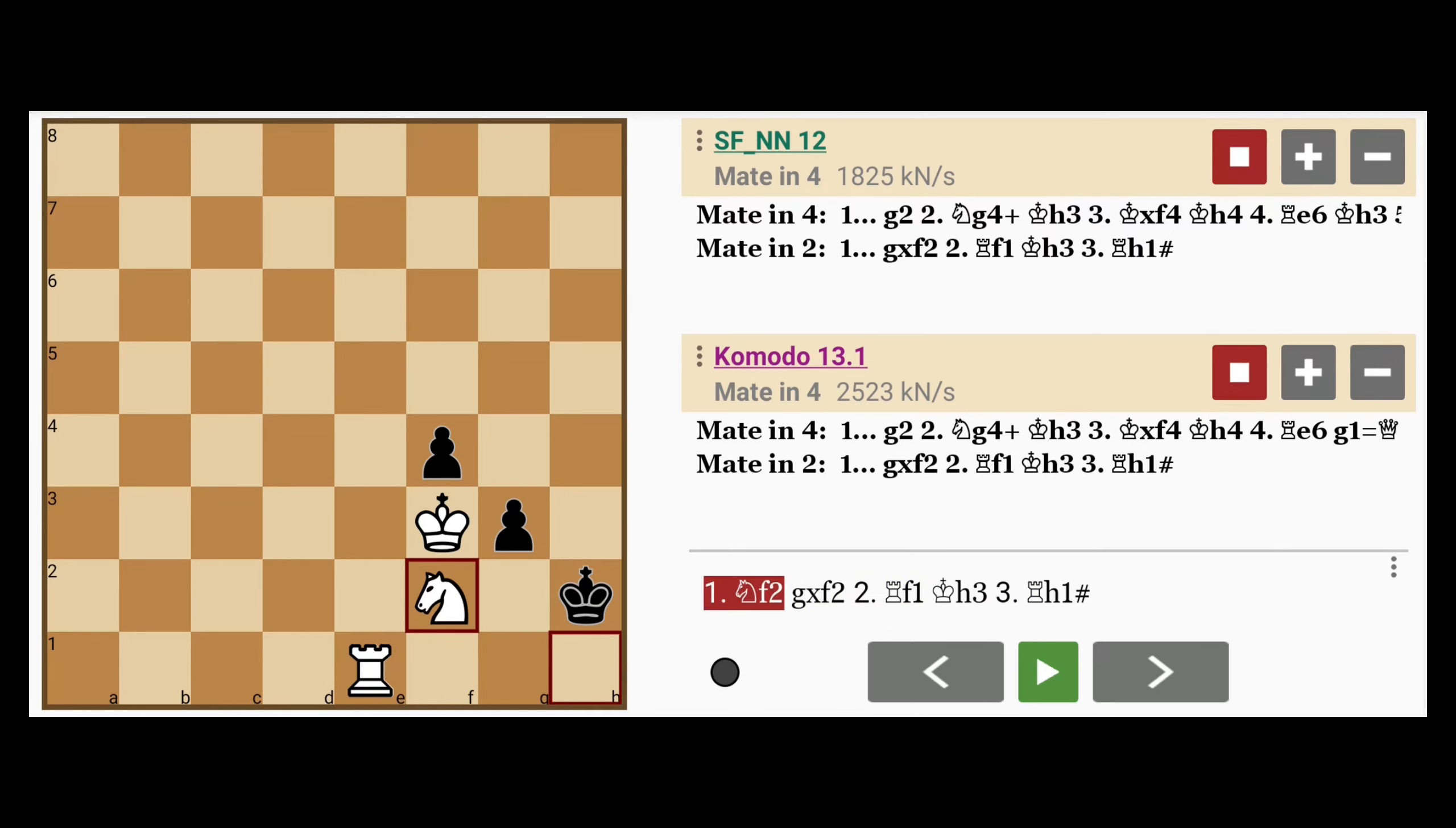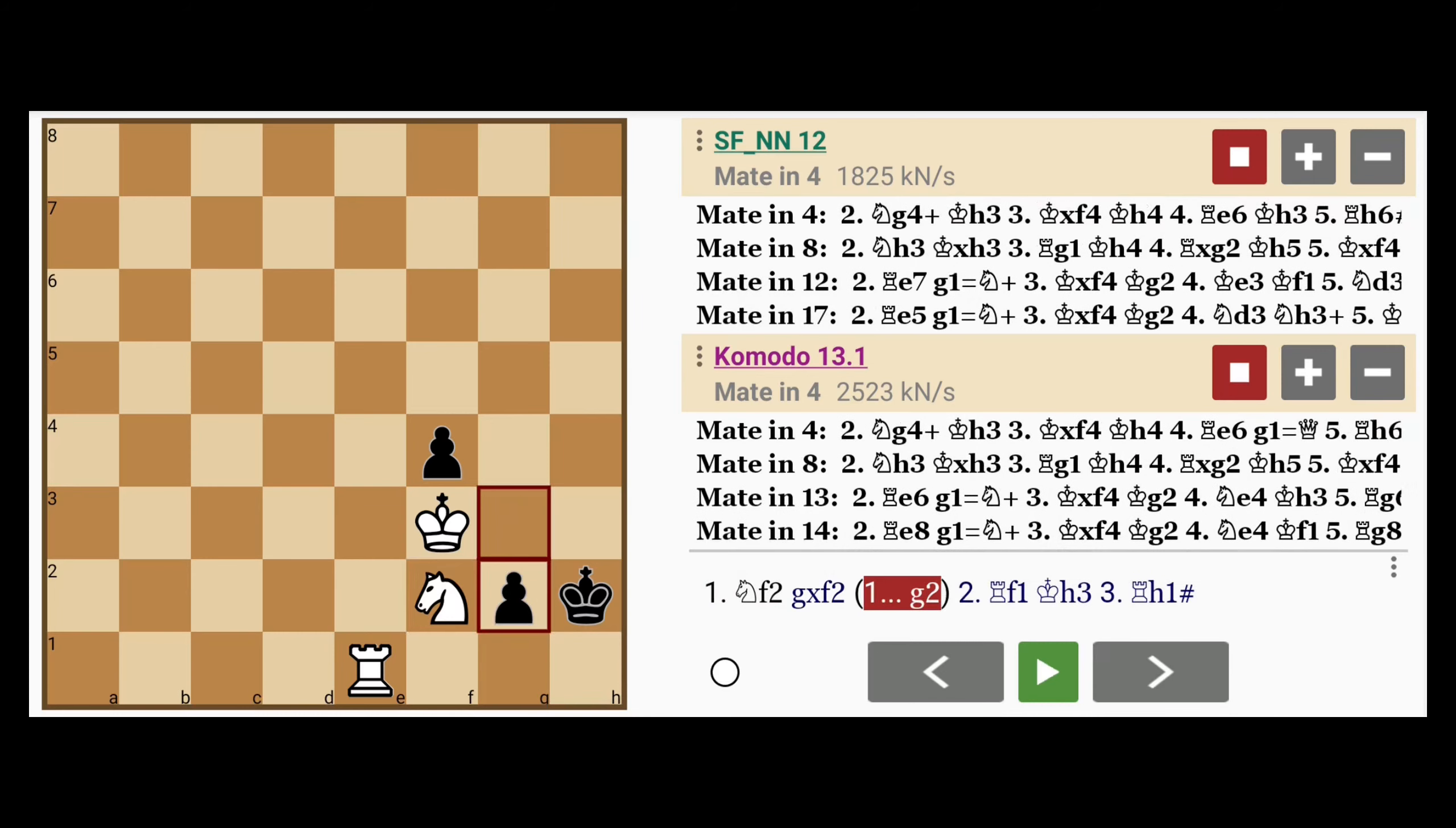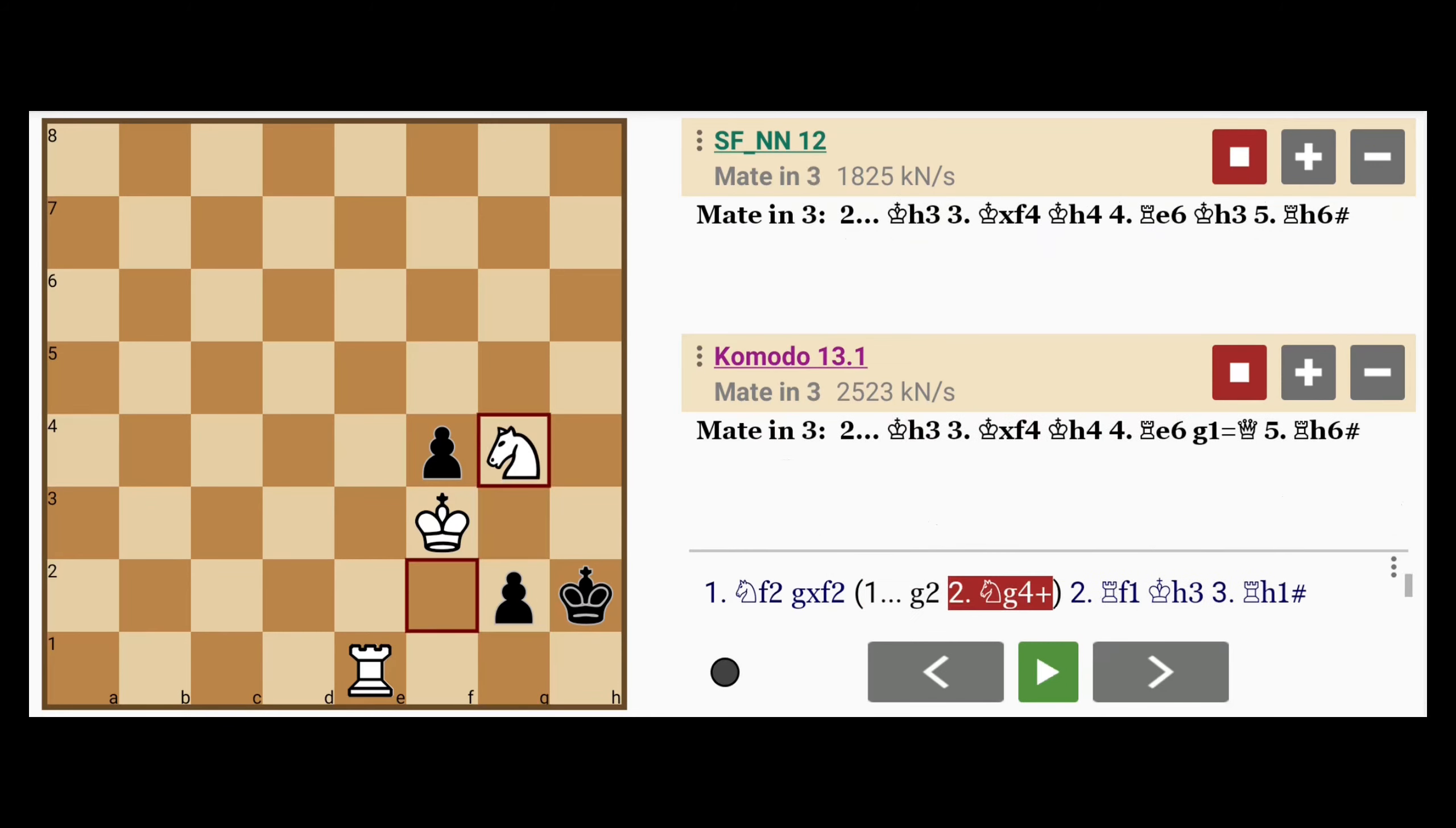What if black sees this? And instead of g capturing the knight on f2, black plays g2. Well, knight to g4 check.